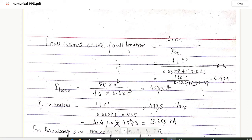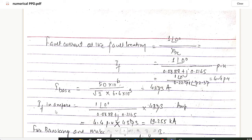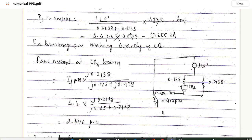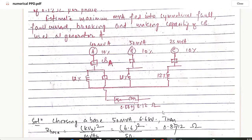The fault current at the fault location is: I_f = 1∠0° / X_BC = 1 / 0.2271∠72.37° = 4.4 per unit. The base current is I_base = 50×10⁶ / (√3 × 6.6×10³) = 4375 A. Therefore the actual fault current is 4.4 × 4375 = 19,225 A or approximately 19.225 kA.